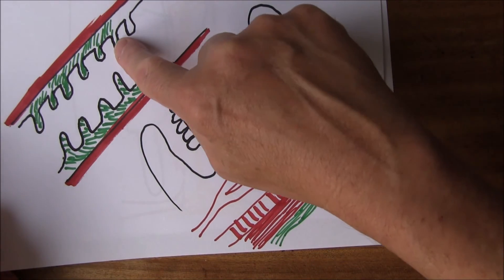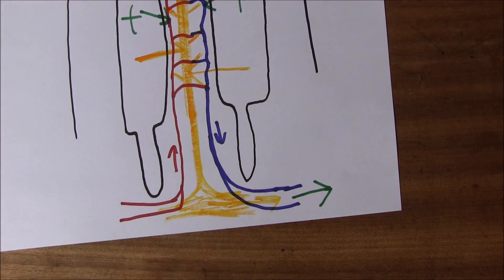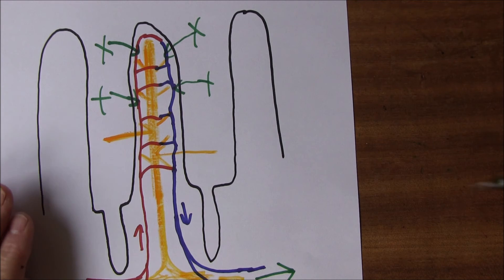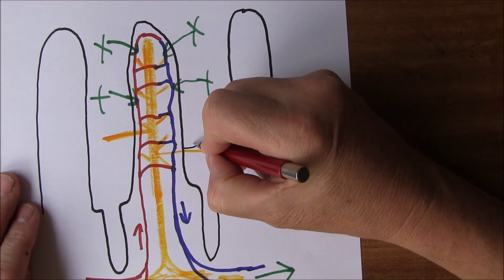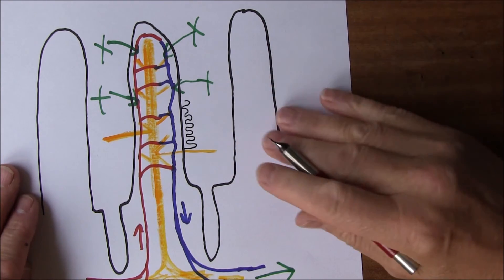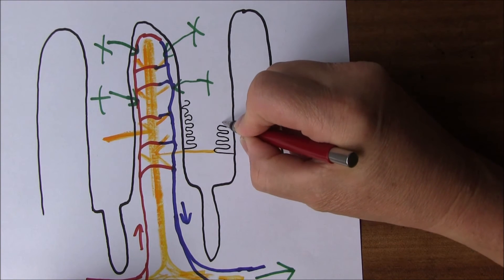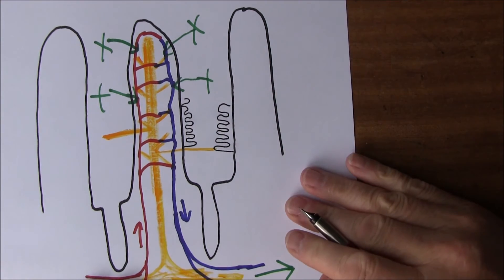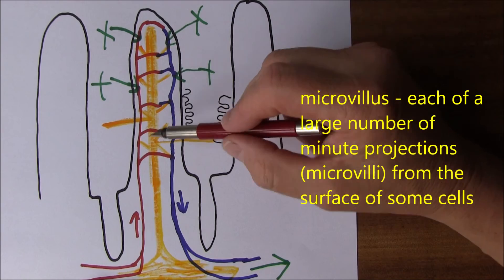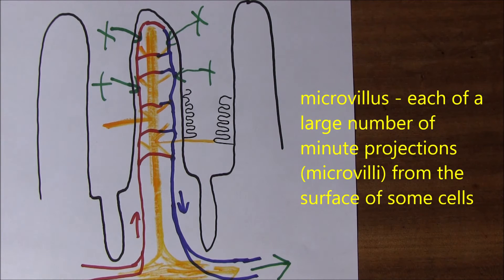So we've got the infolding of the circular folds and the infolding of the villi. But there's another particularly fascinating level of infolding as well, because the surface of each villus is itself lined with numerous microvilli, greatly enhancing the surface area of each villus even further. So we see all these layers of infolding increasing the surface area.